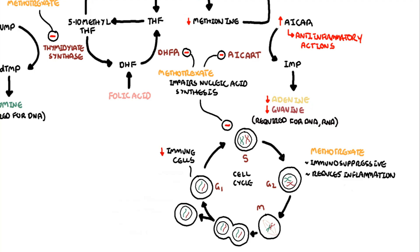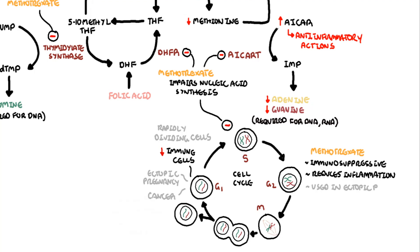Because methotrexate affects nucleic acid synthesis and inhibits the cell cycle from progressing to the S phase, it is also used in other conditions with rapidly dividing cells such as ectopic pregnancy and malignancy, both of which involve rapidly dividing cells.